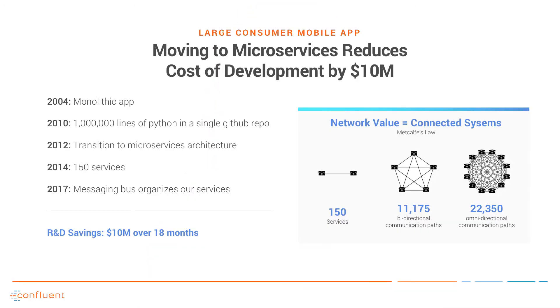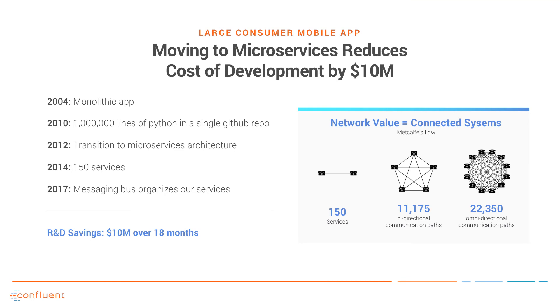In this other use case, a company used Kafka as the backbone for their microservices and successfully reduced the cost of development by $10 million over 18 months. As is often the case with the transition to microservices, they started with a monolithic application. By the time they got to 2010, they had over 1 million lines of code in a single GitHub repo. Today, they have 150 dedicated services all connected to a Kafka backbone. This approach follows Metcalfe's law, which declares that the value of a network scales with the number of connected devices, or in our case, services.